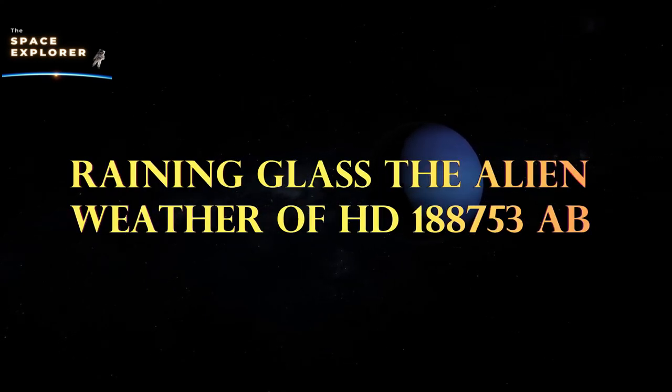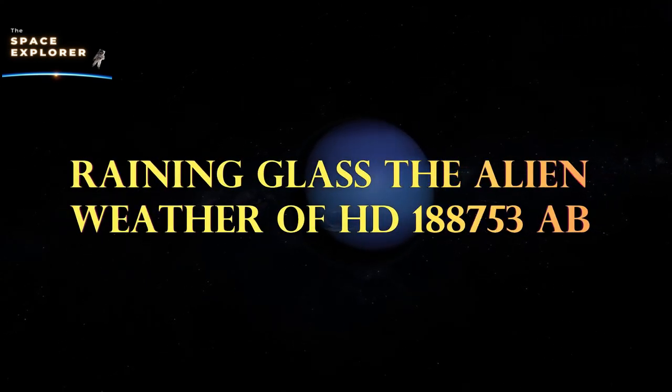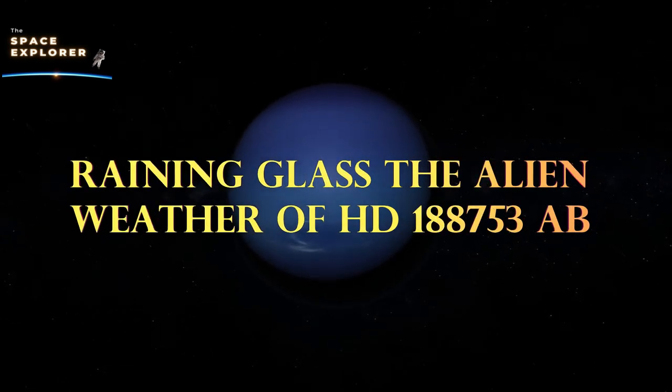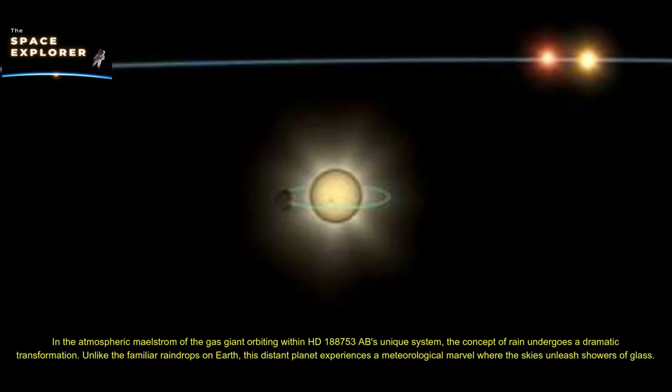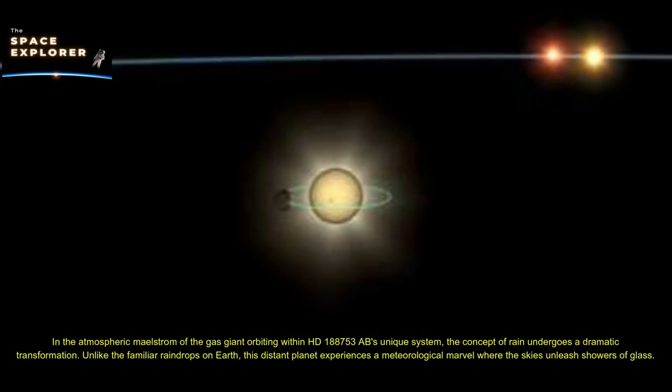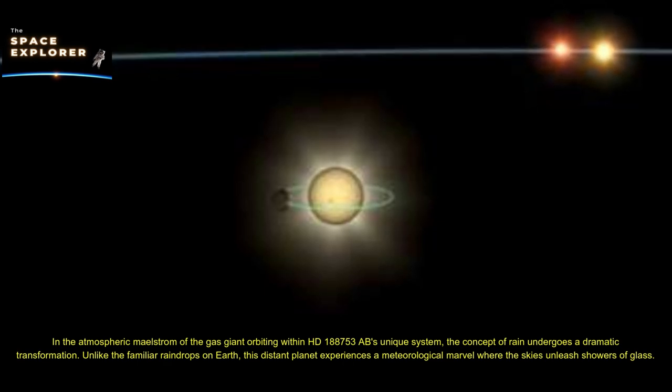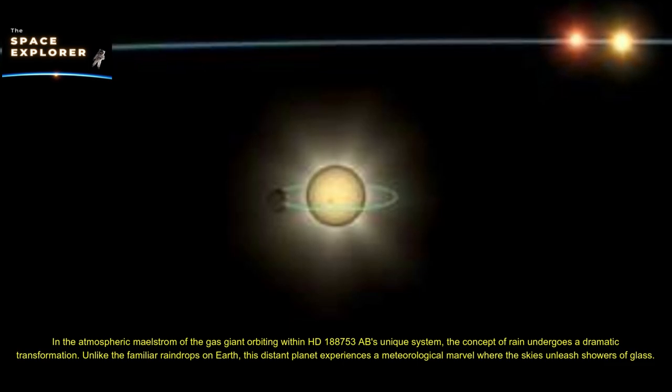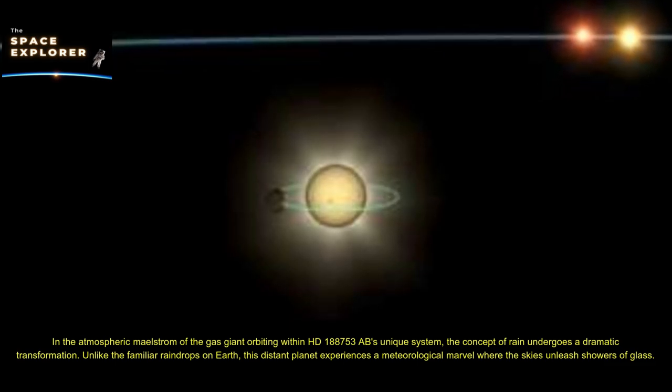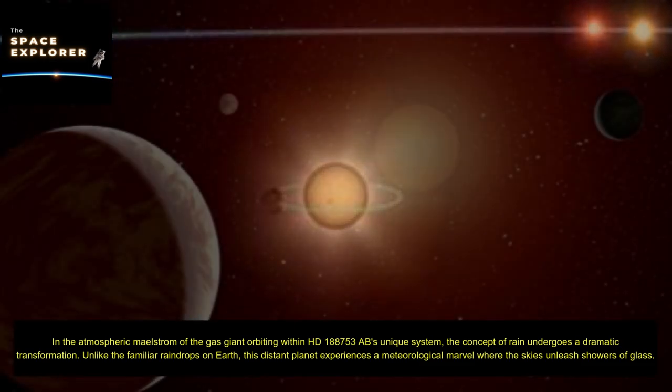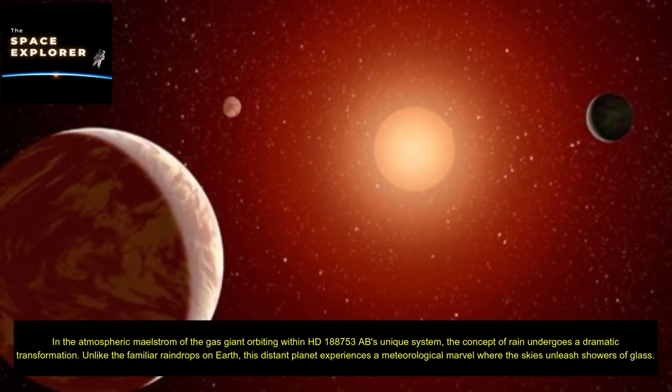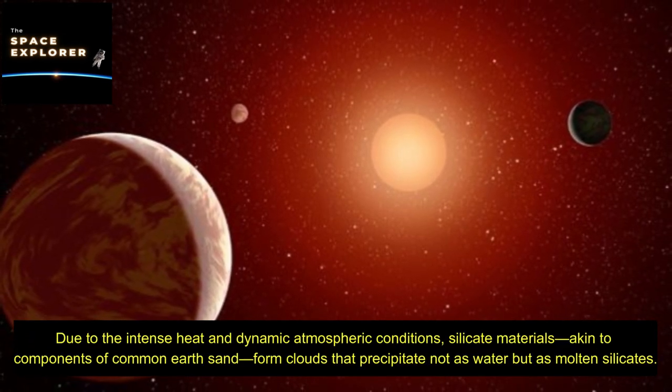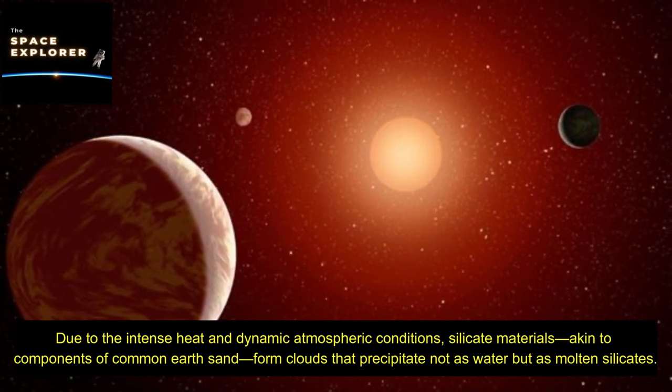Raining glass: the alien weather of HD 188,753 AB. In the atmospheric maelstrom of the gas giant orbiting within HD 188,753 AB's unique system, the concept of rain undergoes a dramatic transformation. Unlike the familiar raindrops on Earth, this distant planet experiences a meteorological marvel where the skies unleash showers of glass.